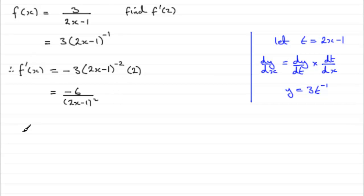So we've got what f dash of x is, so we can therefore find what f dash of 2 is going to be. And if we do that, we're going to find that we have minus 6 over, and substitute the 2 in here,